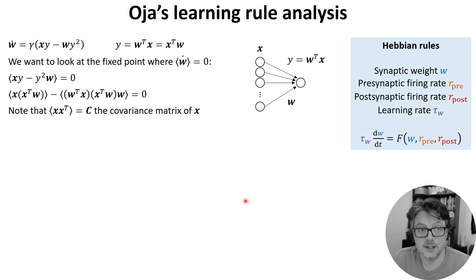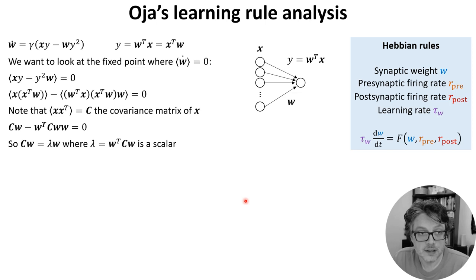So the first thing to note is that the mean of X X transpose is C, the covariance matrix of X. Using this, we can rewrite the equation above like this. Now, since W transpose C W is a scalar, that's this part here, which we'll call lambda, this equation becomes C W equals lambda W.